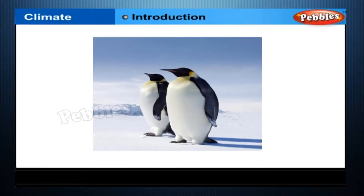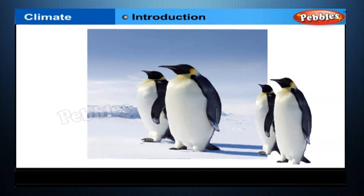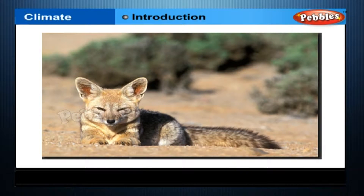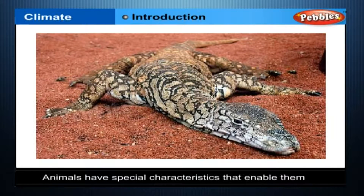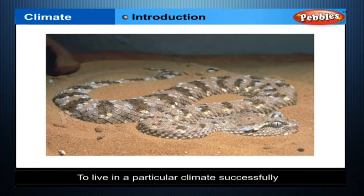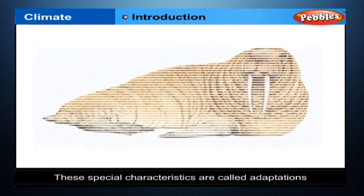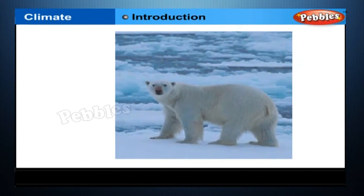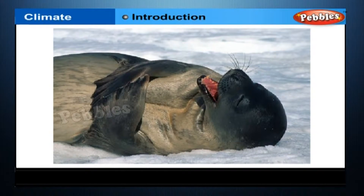Have you ever imagined how polar bears can live in the Arctic and penguins can survive in Antarctica? How do some animals survive in the deserts with so little water? That is because these animals have certain special characteristics that enable them to live in a particular climate successfully. These special characteristics are called adaptations. We can define adaptation as the way that makes it possible for an animal to live in a particular place.